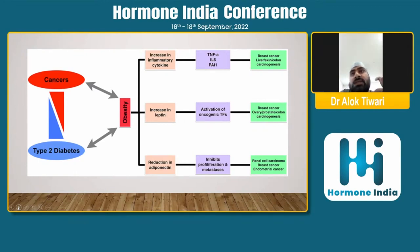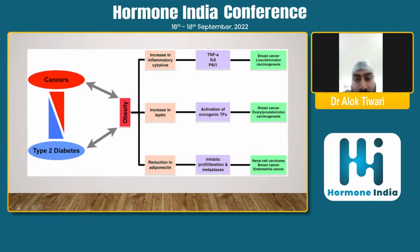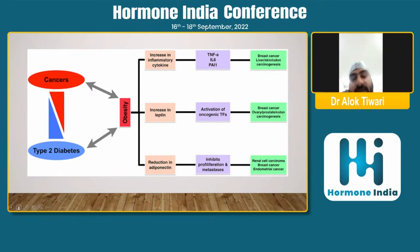Prostate cancer is a controversial issue — obesity increases the risk of prostate cancer, but diabetes appears to have somewhat of a protective effect, as lower incidences of prostate cancer are seen in diabetic patients. Reduction in adiponectin inhibits proliferation pathways, and so renal cell carcinoma, breast cancer, and endometrial cancer risk increases.